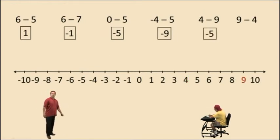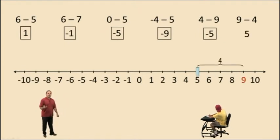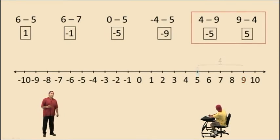Well, what about 9 subtract 4? If we start at 9 and move 4 units to the left, we arrive at 5. And 9 subtract 4 is 5. So look, 9 subtract 4 is a positive 5, 4 subtract 9 is a negative 5.